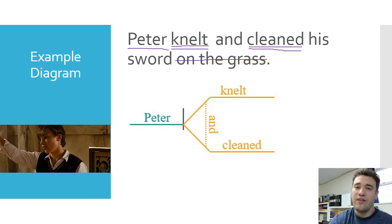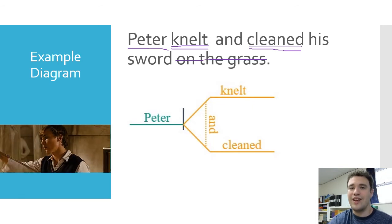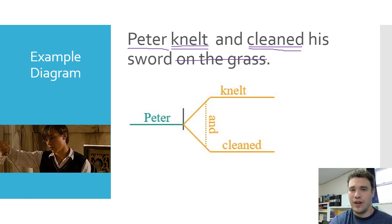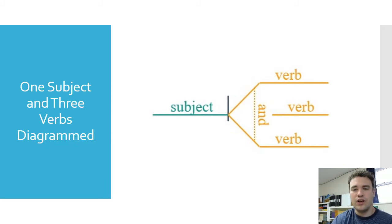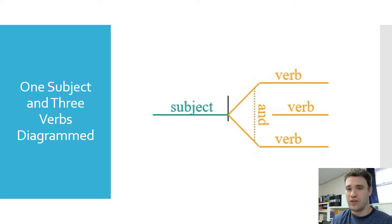What if we have the same subject doing three different actions? It's pretty much the same as having three subjects, just on the other side of the diagram — flipped. The subject is on a single horizontal line before the vertical line, and after the vertical line we have the rocket ship structure with an added line in the middle for the third verb. The verbs go in order: the first on top, the second in the middle, and the last on the bottom.